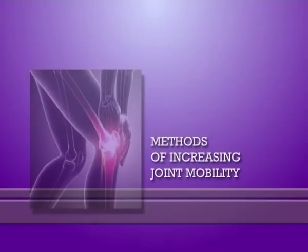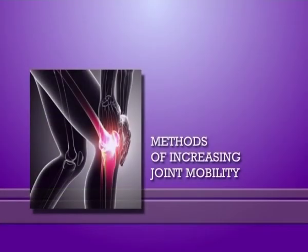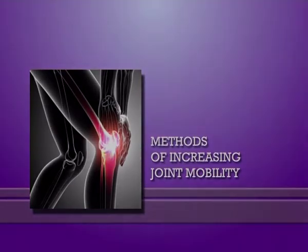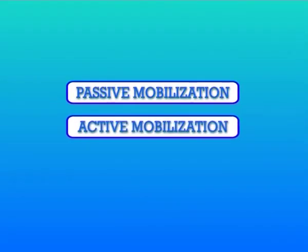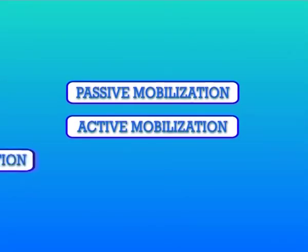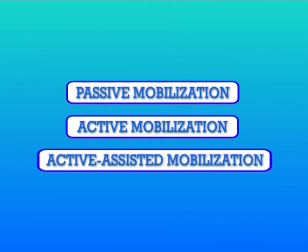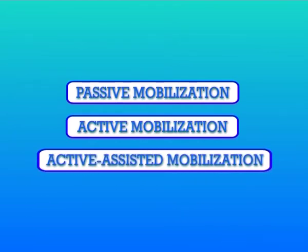Here next comes the methods of increasing joint mobility. There are three types of joint mobilization: first is passive mobilization, second is active mobilization, and third is active assisted mobilization.